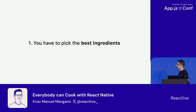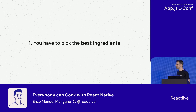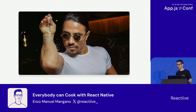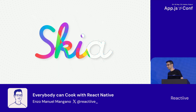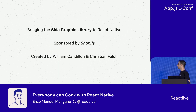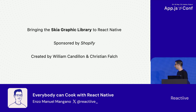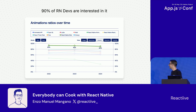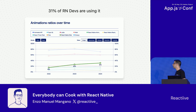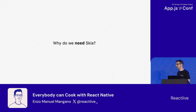At the very beginning I was talking about multiple ingredients, and I really feel we are missing the salt that will make our dishes taste better — we are missing React Native Skia. React Native Skia is a package created to bring the Skia graphics library to React Native. It is sponsored by Shopify and created by William Candio and Christian Fouck. There is a lot of traction behind Skia — 90% of React Native devs are interested in it according to the State of React Native 2024. But there is quite a huge gap between usage and interest.